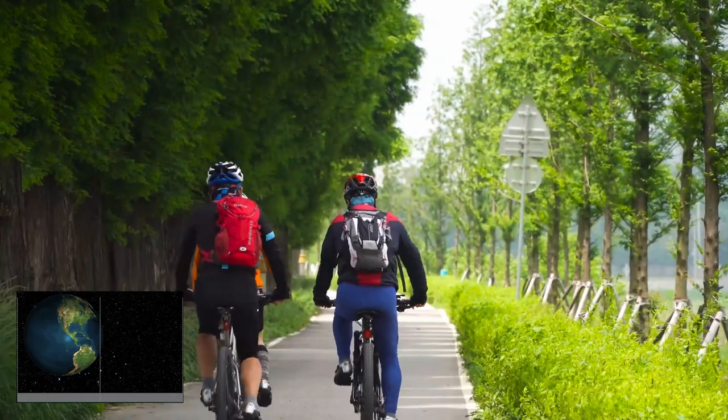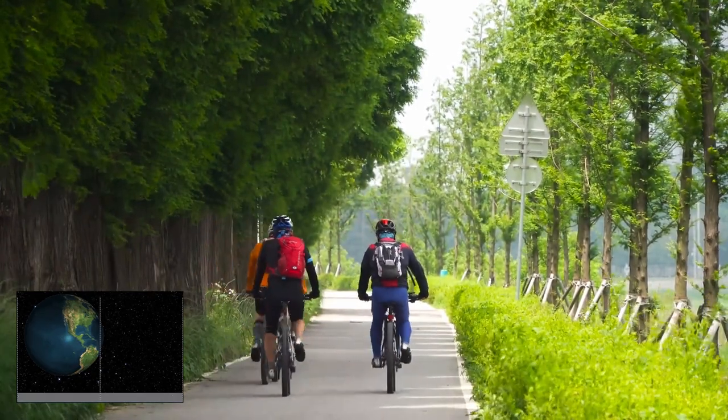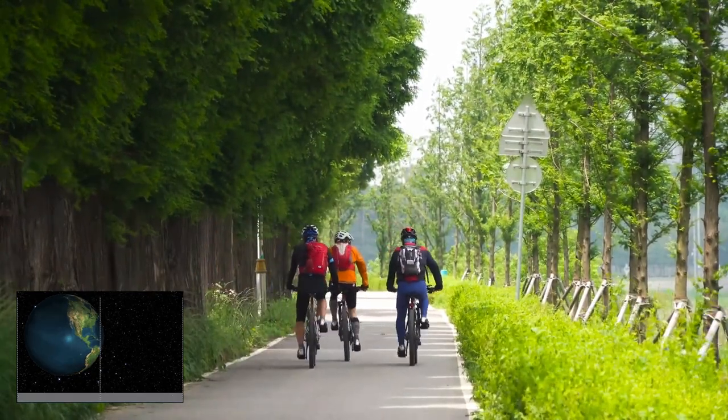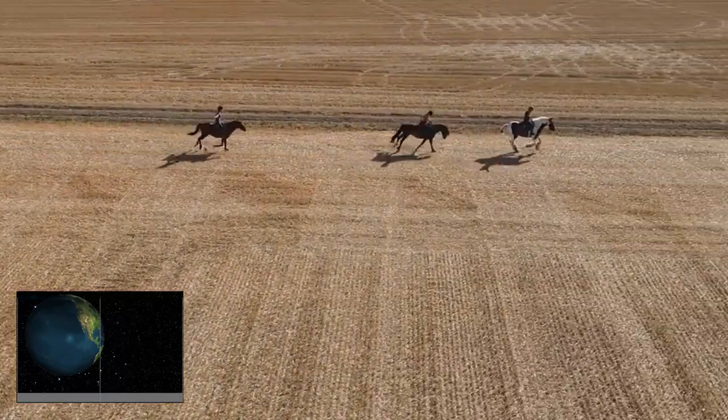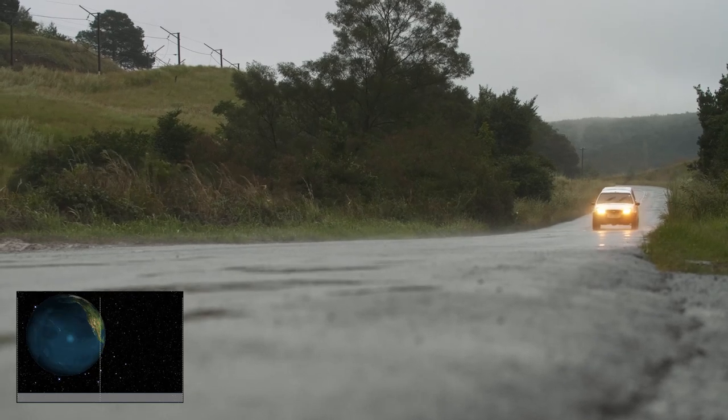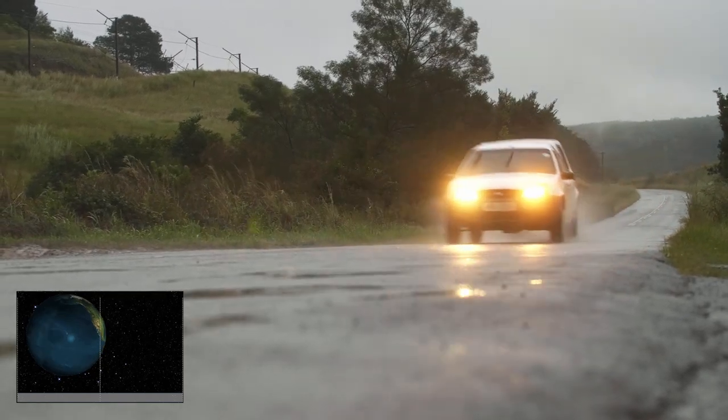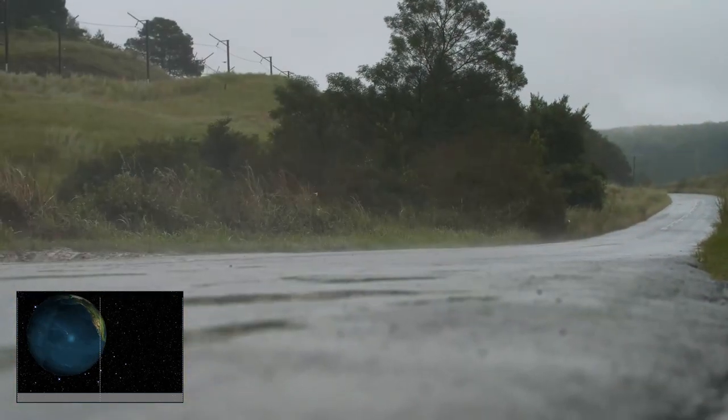When we ride a bicycle, we feel the wind blowing in our face, which is proof that we're moving. Riding a horse, we feel our speed with every movement the horse makes. Sitting in a car, we get pushed into the seats when accelerating, tilted to the side when cornering and pulled forward when braking.